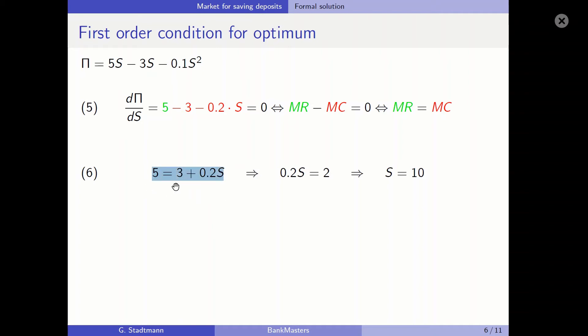Solving for S: moving 3 to the other side gives 0.2S equals 2, so S equals 10. The optimal quantity is 10. The bank should buy 10 units in the saving market and sell those 10 units in the money market.